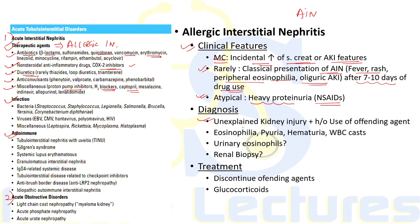For diagnosis, unexplained kidney injury with history of use of an offending agent should raise suspicion of allergic interstitial nephritis. Pyuria, hematuria, and WBC casts can be seen on urine examination. Eosinophilia adds supporting evidence but is present only in a minority of cases. Testing for urinary eosinophils is neither sensitive nor specific for AIN and is usually not required.